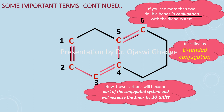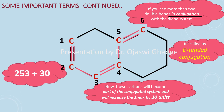Each extended conjugation contributes to lambda max by 30 units. For calculating lambda max, we add 30 units to the base value. Here, the base value taken is 253 nm for the homoannular system.